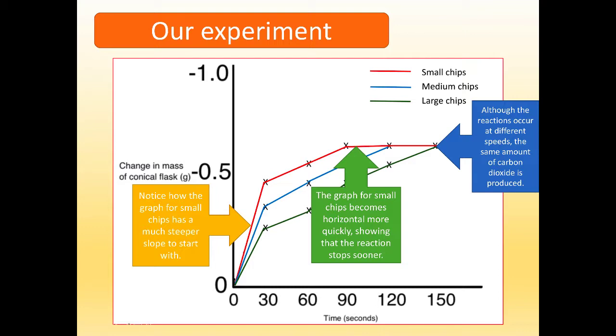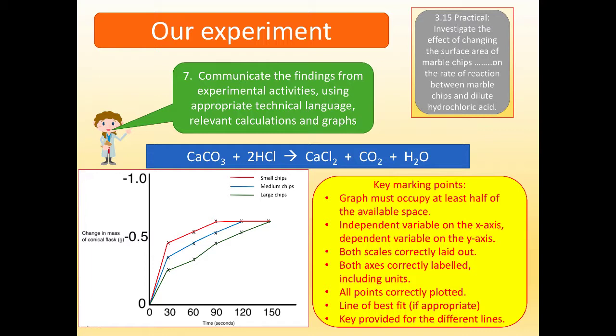Now, how do we go about scoring well on our graph? Number seven: communicate the findings from experimental activities using appropriate technical language, relevant calculations, and graphs. Here's a graph. You saw this a minute ago for the investigation. And here's some key points. Whenever you're drawing any graph, these are key points you might consider. First of all, the graph must occupy at least half of the available space. Secondly, if possible, the independent variable should go on the x-axis and the dependent variable on the y-axis. Both scales should be laid out so they are evenly spread. Both axes are correctly labelled, change in mass conical flask and time in seconds, including units. All points plotted correctly, use line of best fit if appropriate, and then also do a key for the different lines as we have here.